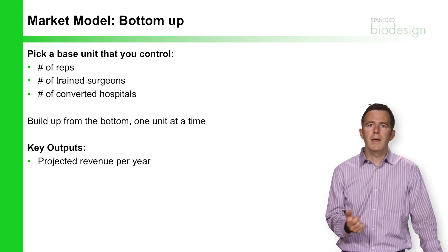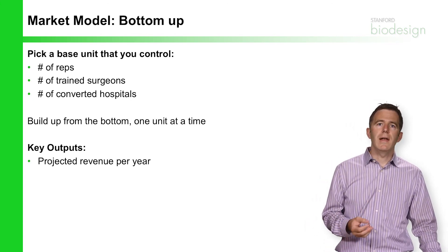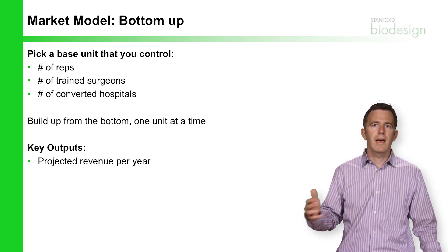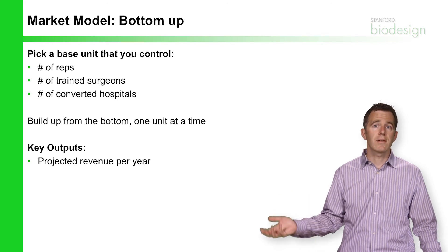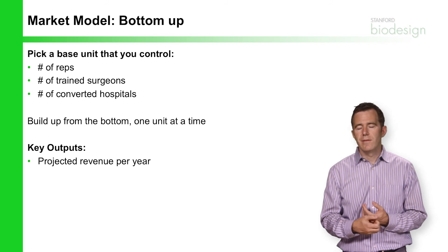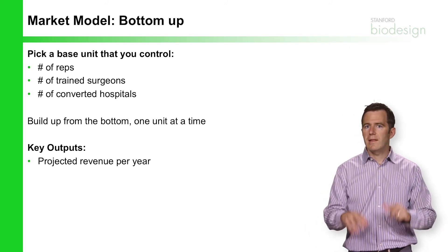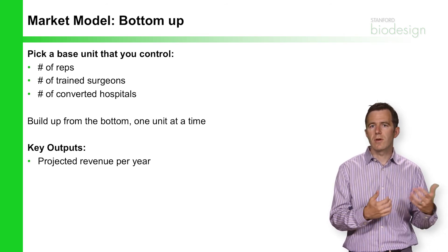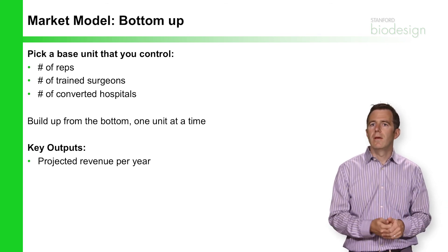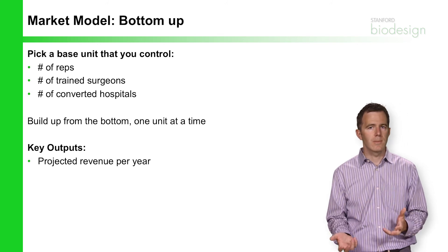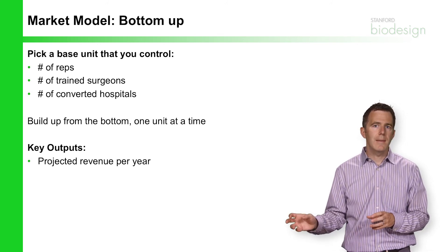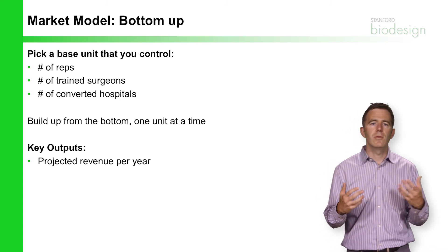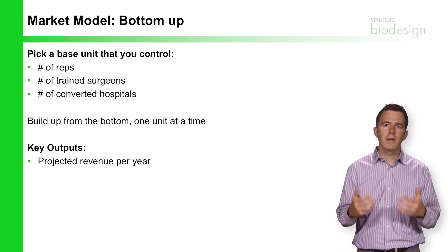For example, at one of my companies called Aclarence, our business model relied on training doctors. We were able to understand exactly how much revenue we would generate based on the number of doctors that we trained. If I trained five surgeons, I knew that at least one would convert into a very high quality user who would use our product five times a month, two of those surgeons would use it maybe two times a month, and the other two might not pick up the device at all. This allowed us to predict our business very well by understanding exactly how our market and our revenue would grow.